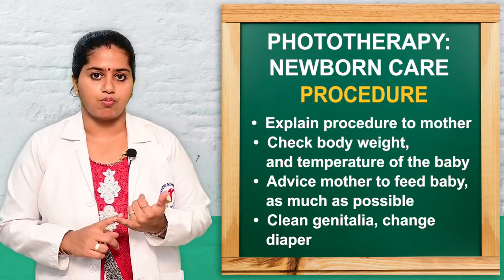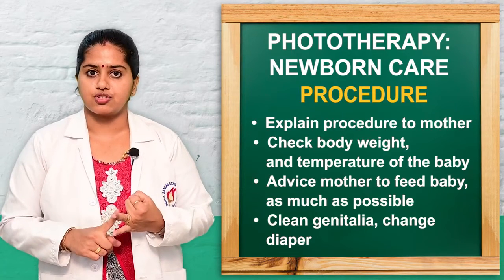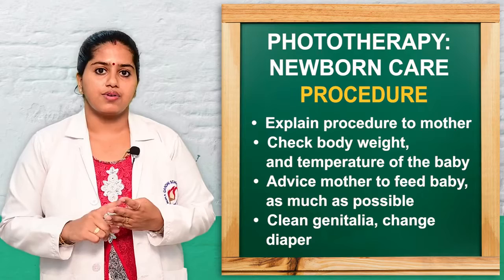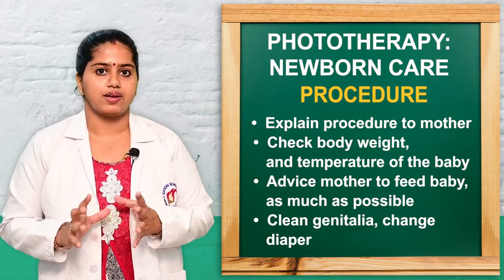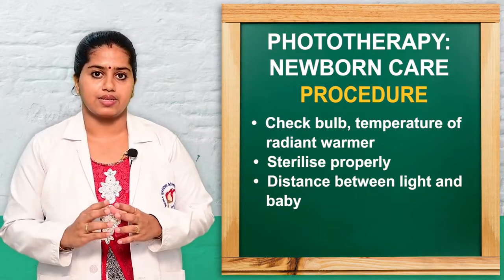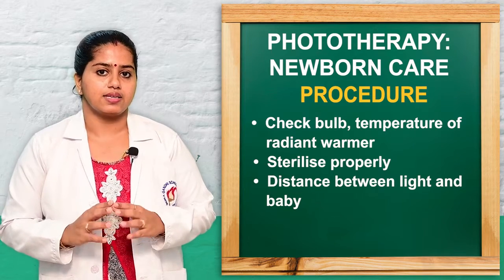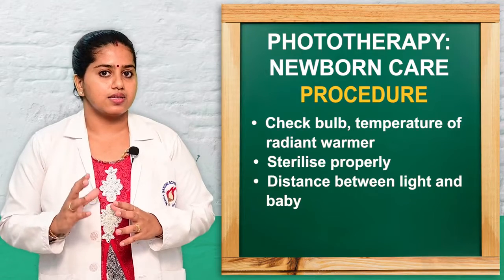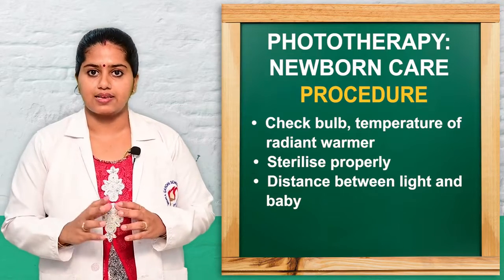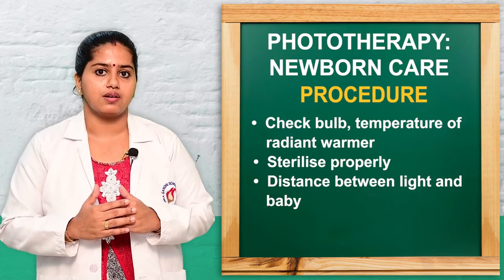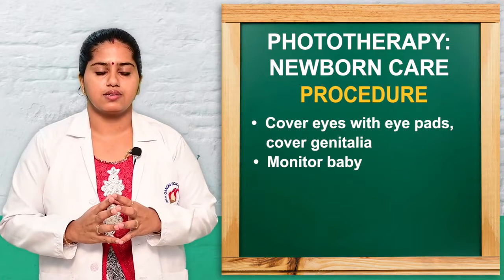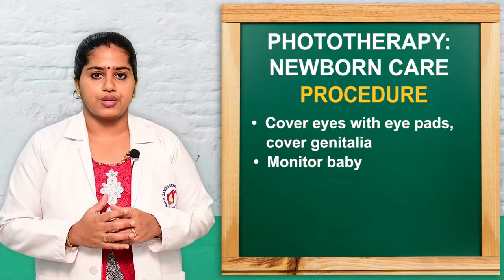Next, check the body weight and temperature of the baby, and advise the mother to feed the baby as much as possible. Clean the diaper area and keep the genitalia clear. Then check the phototherapy unit — ensure the light, electricity, and bulbs are all working properly, the radiant warmer or incubator is running correctly, and there are no ants or insects. The unit should be sterilized properly, and the correct distance between the baby and the bililight must be maintained.